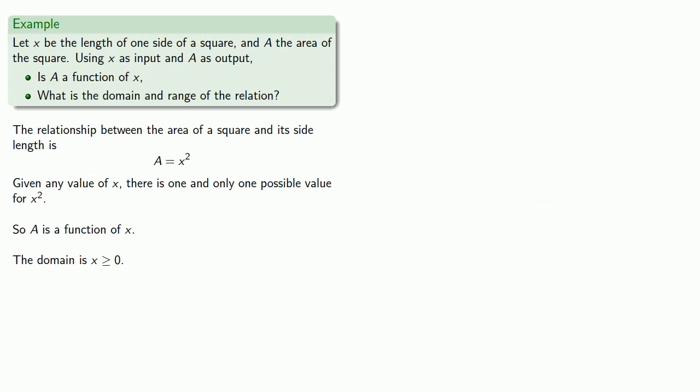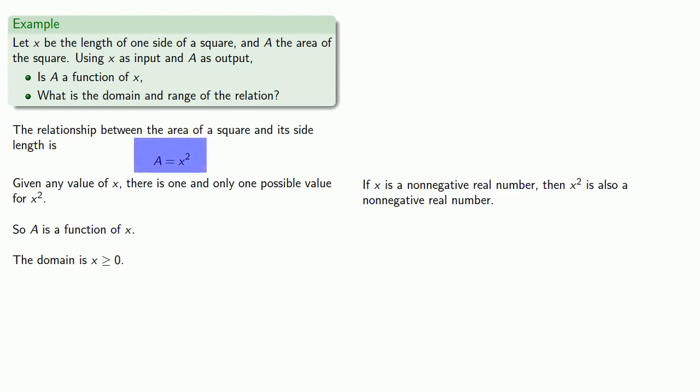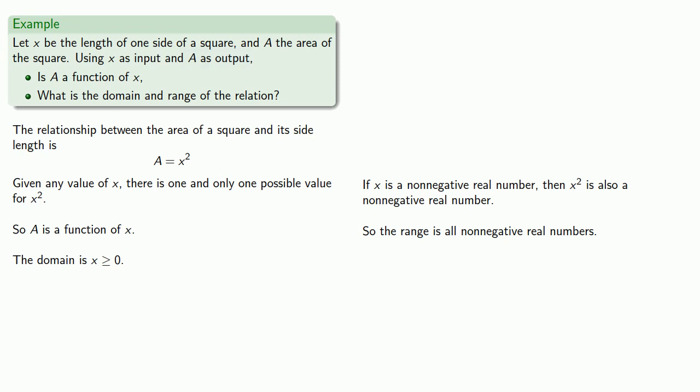How about the range? If x is a non-negative real number, then x squared is also a non-negative real number. Since x squared is the area and the area is the output, the range is all non-negative real numbers. So the range is a greater than or equal to 0.